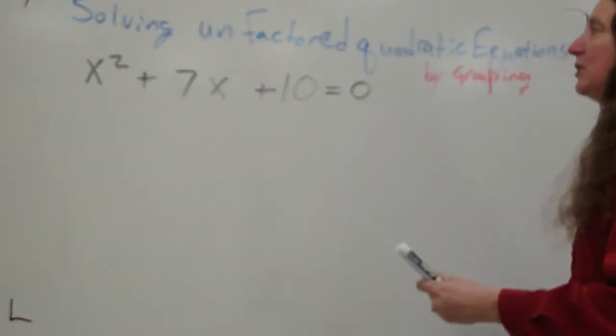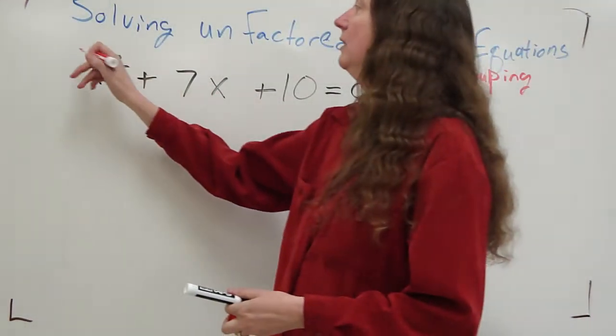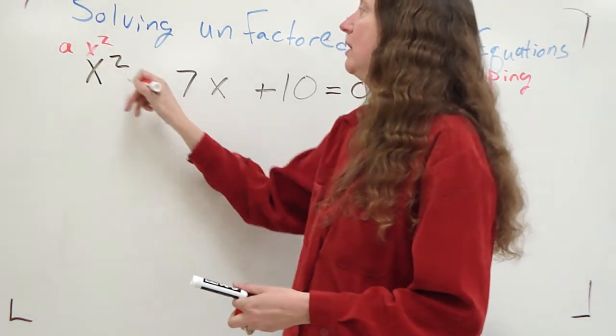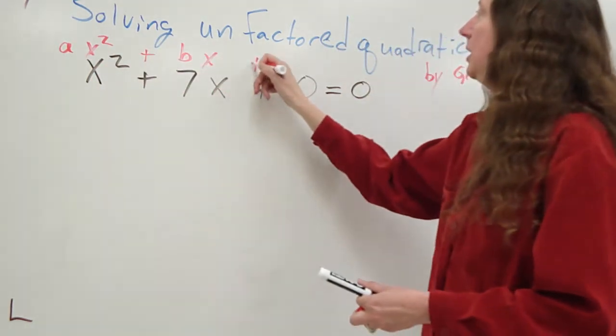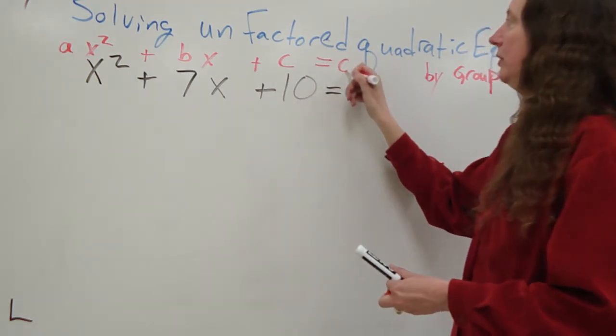First thing you have to do here is make sure that this is set up as ax squared plus bx plus c equals 0.